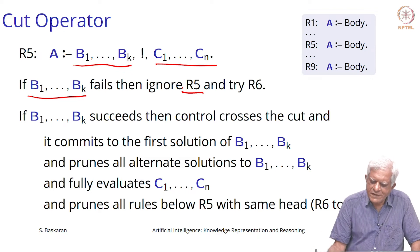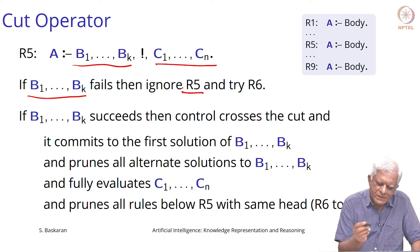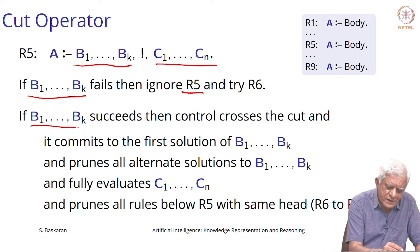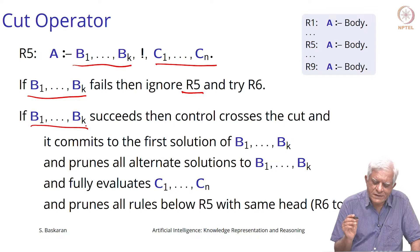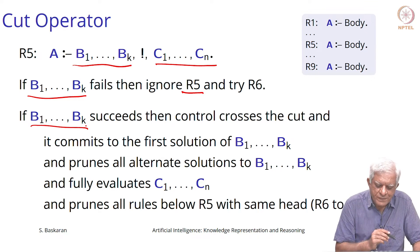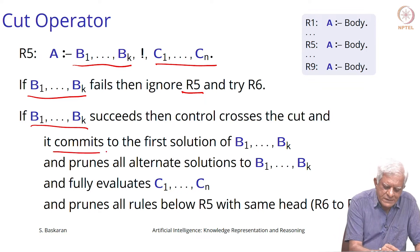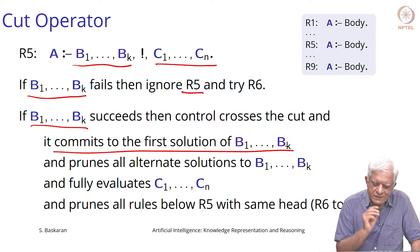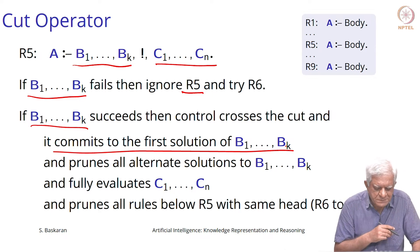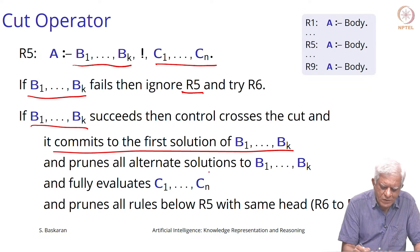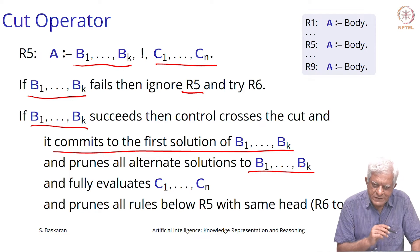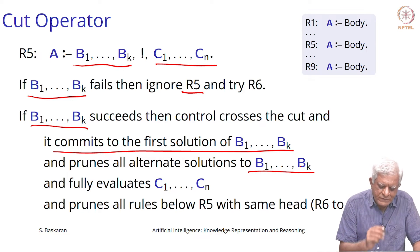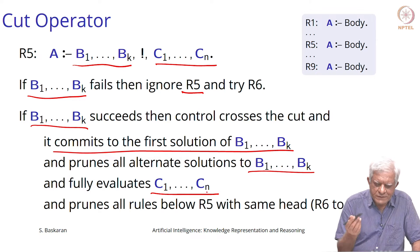We have a set of rules, let us say r1 up to r9 or something. If you fail to reach the cut, you simply backtrack and behave like everything is normal and go and try the next rule. However, if b1 to bk succeeds and then you cross the cut and go to the c's in this rule, it commits to the first solution of b1 to bk. That one solution is the only solution you can give back to the user, and it prunes all alternate solutions to b1 to bk from rule r5. It fully evaluates c1 up to cn, though c1 up to cn may give you more than one solution and you are allowed to give those solutions out.